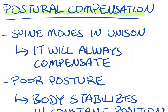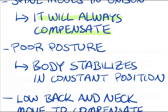The most likely cause of back pain is postural compensation. You're probably sitting in a poor posture, or you just have poor posture no matter what you're doing — whether you're standing, sitting, or walking around. There's something going on that you might not be aware of, but it could be causing changes in your body that result in low back pain. The spine moves in unison; it's pretty much one entire unit and will always try to compensate. If one part of the spine isn't moving well, other parts will move to compensate for that lack of motion by creating more motion in different areas.